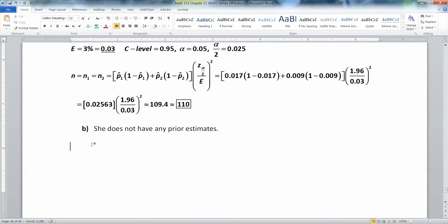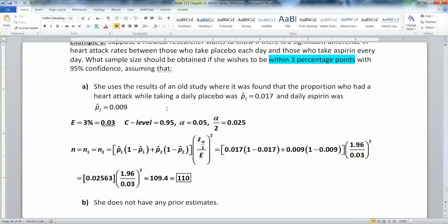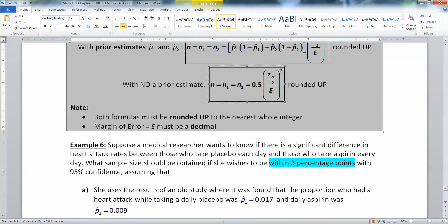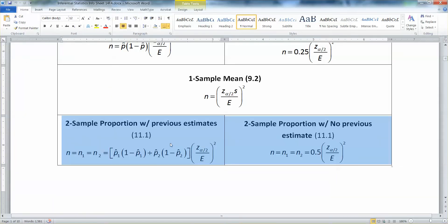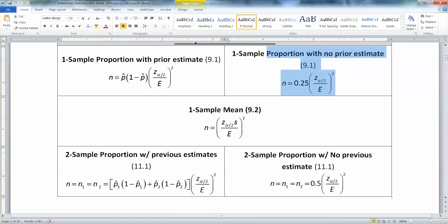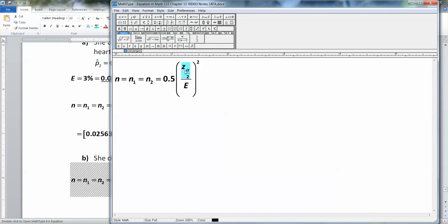Alright, now what if she doesn't have any prior estimates? Well, that makes the formula considerably easier because you just have the 0.5 in there. Now be careful. Notice this is not 0.25. That's what it was for this one right here. This one is a 0.25 because it's for a single. But when it's two proportions, so this is a single sample or a single population proportion. This is two sample population proportion, two populations. So you got to be careful. Single population, single sample here, two samples, two population here. Okay, so 0.5, but this isn't going to change. This is still 1.96, and this is still 0.03.